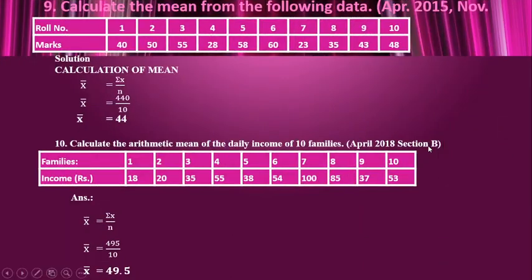These questions are for practice. Another question with roll number and marks — roll number is not taken, only the marks are considered. The total is 440. σx = 440, n = 10, so x̄ is 44.